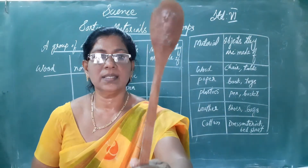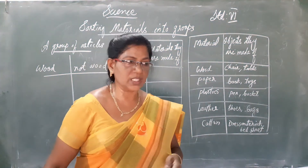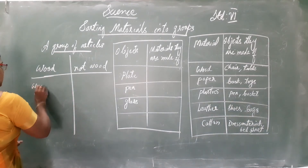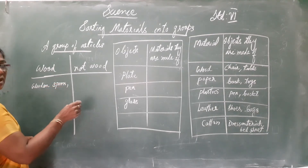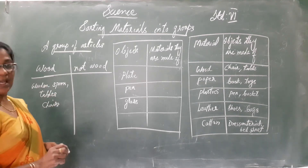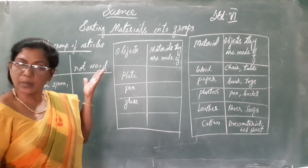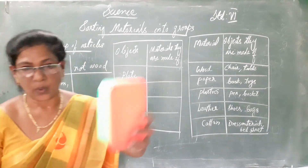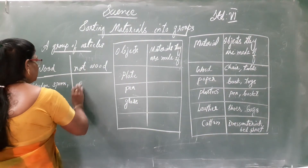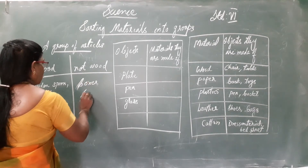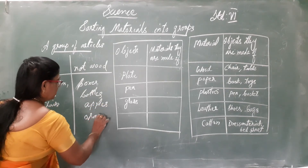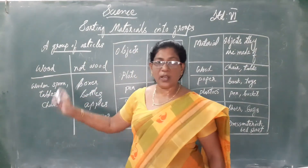This is a spoon. This spoon is made up of wood. So the wooden materials can be a wooden spoon, table, chairs, and all other items given on the board as well as many other items. Boxes, bottles, apples, oranges — these are not made up of wood.